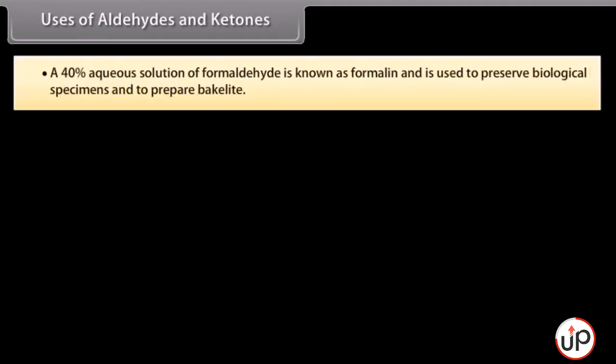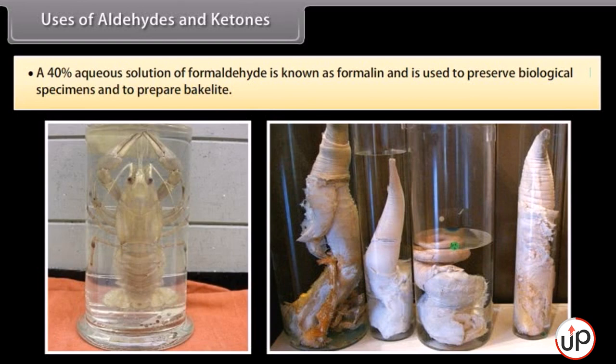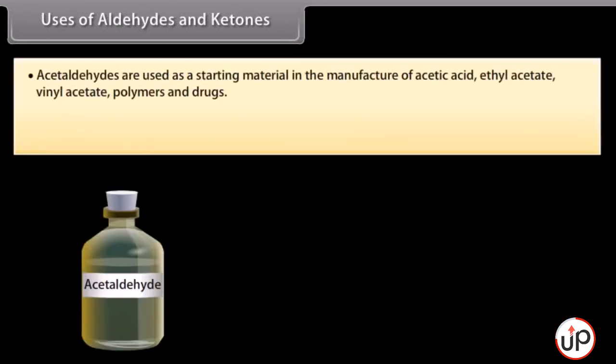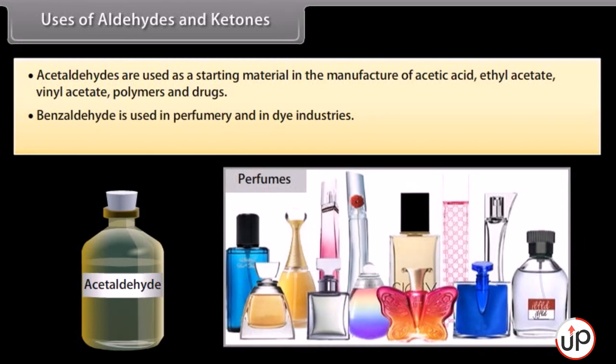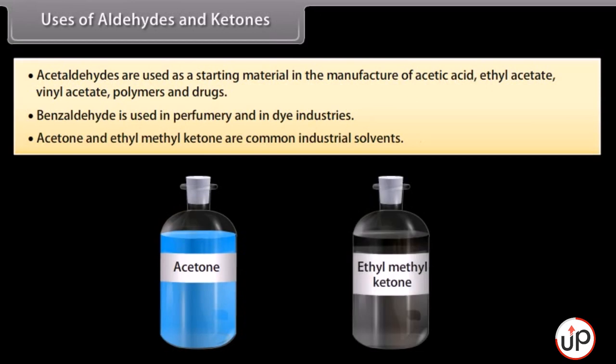Uses of aldehydes and ketones: a 40% aqueous solution of formaldehyde is known as formalin and is used to preserve biological specimens and to prepare bakelite. Acetaldehyde is used as a starting material in the manufacture of acetic acid, ethyl acetate, vinyl acetate, polymers and drugs. Benzaldehyde is used in perfumery and in dye industries. Acetone and ethyl methyl ketone are common industrial solvents.